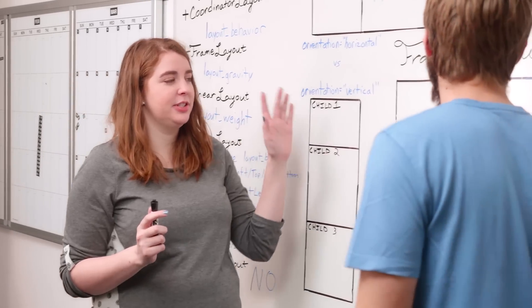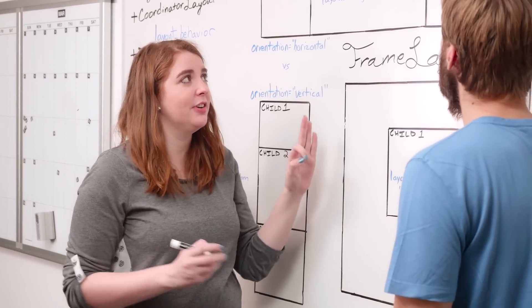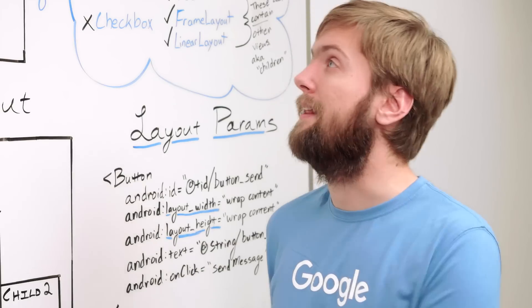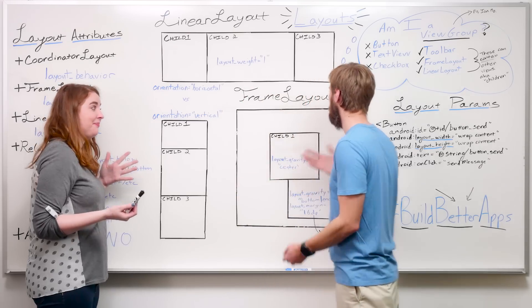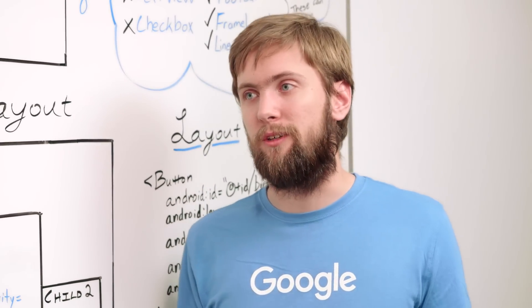Exactly, and we actually have all of these different layouts to choose from because they are functionally different in how they lay their children out. Right, like linear layout is always one row or one column, while frame layout can have overlapping children.